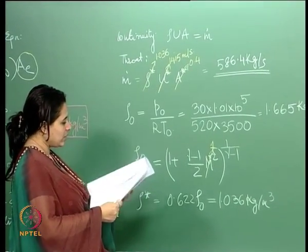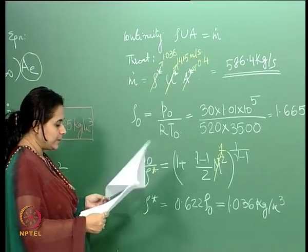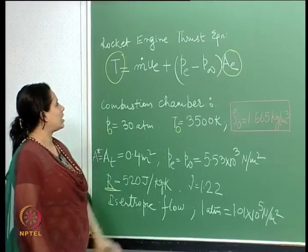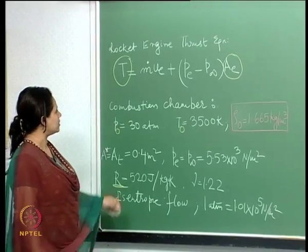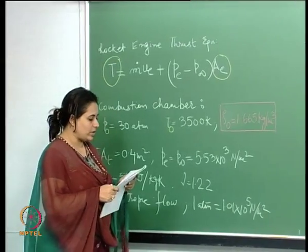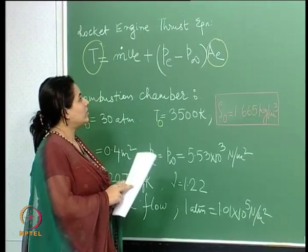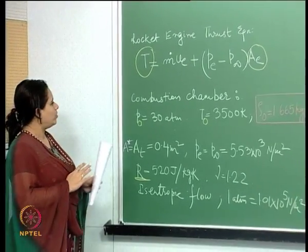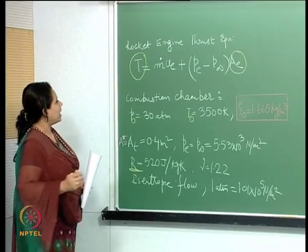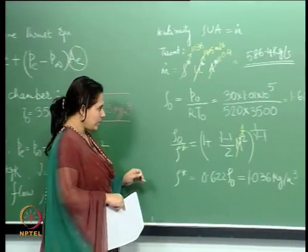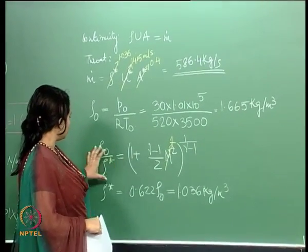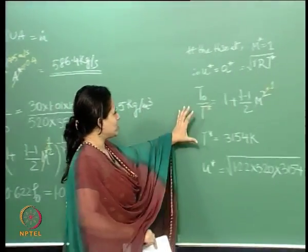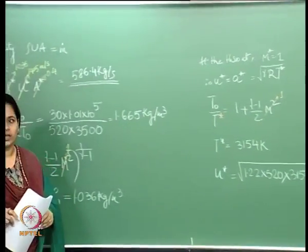Having found the mass flow rate, the next thing we need is the velocity at the exit, U_e. Let us try and find the Mach number at the exit first, since we have relationships between density, temperature, and Mach number. We will use the stagnation pressure relation — knowing P_0 and P_e, we can find the exit Mach number.